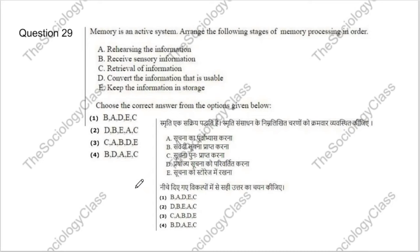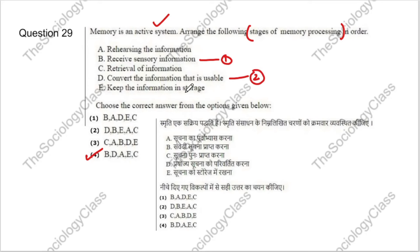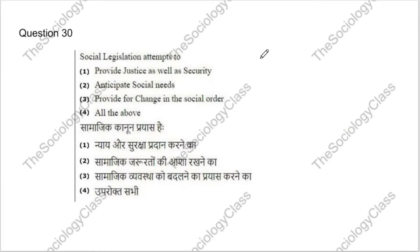Question 29: Memory is an active system. Arrange the stages of memory processing in order. The correct answer is D: first, receive sensory information; second, convert the information into usable form; third, rehearse the information; fourth, keep the information in storage; and finally, retrieval of information. Read a bit more about this topic.